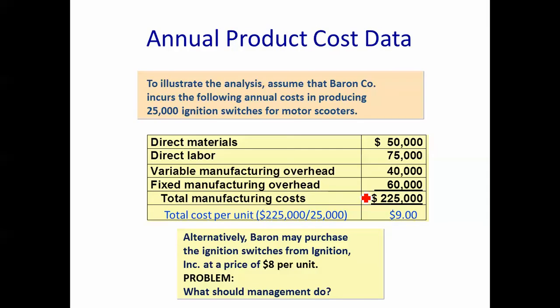To illustrate, assume Marron Company incurs the following annual costs producing 25,000 ignition switches for motor scooters: direct materials $50,000, direct labor $75,000, variable manufacturing overhead $40,000, fixed manufacturing overhead $60,000 — total manufacturing costs $225,000. Therefore the unit cost is $9.